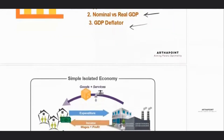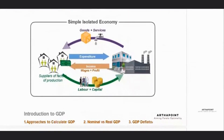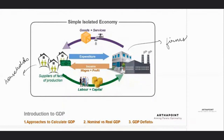Let's dive right in. Now, imagine a very simple, isolated economy where there are just two players of the economy. One are the households and the other are the firms. The factors of production exist in two forms: one is labor and one is capital.